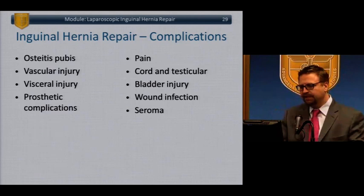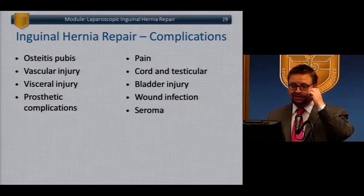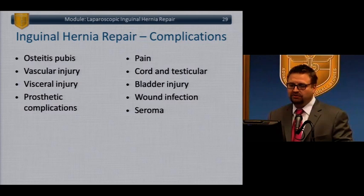Complications of inguinal hernia repair include vascular injury — especially in laparoscopy, remember the triangle of doom, where a tack gives you iliac bleeding. Also bowel injury, prosthetic complications like mesh migration, erosion, and infection. Pain, cord injuries — review the structures of the cord and associated injuries. Bladder injury, infection, and seroma.